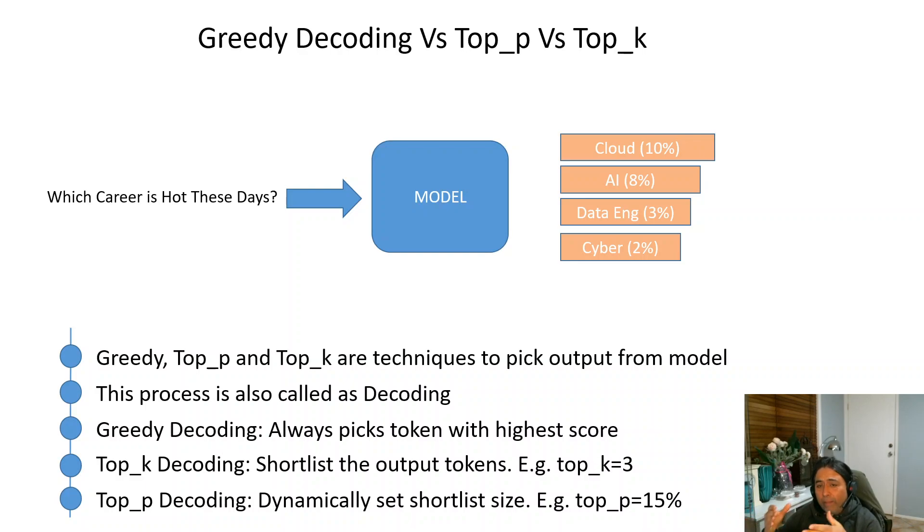So this is the main difference between these three decoding techniques. Just to summarize: greedy decoding always returns the topmost. Top_k returns any random value from a shortlisted output token queue. For example, in our case, we have given it three, so it will return any of the tokens from the three. And then for top_p, we dynamically set the shortlist size.